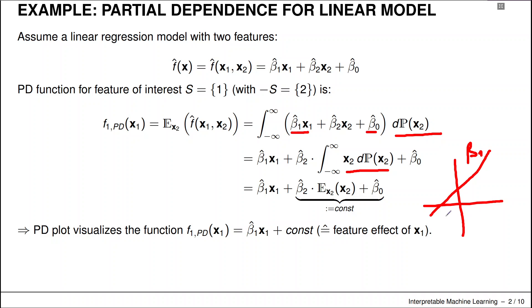The only thing that is potentially different now is that this function here is shifted by a certain intercept, which is given by these two values, which is the intercept of our original linear model. And then there's a second term in there, which is the beta two coefficient times the expectation of x2.